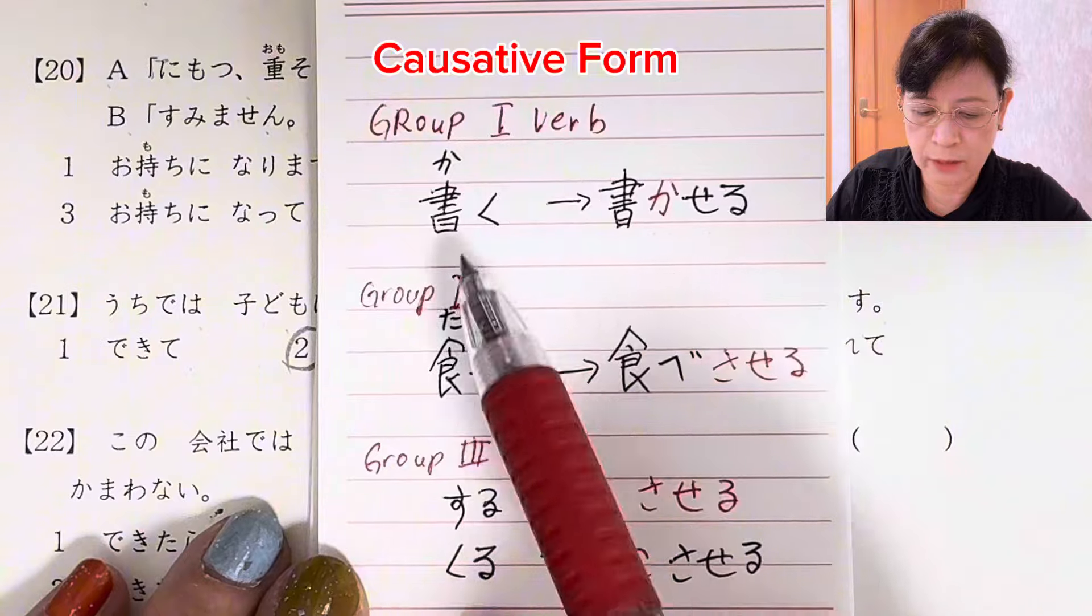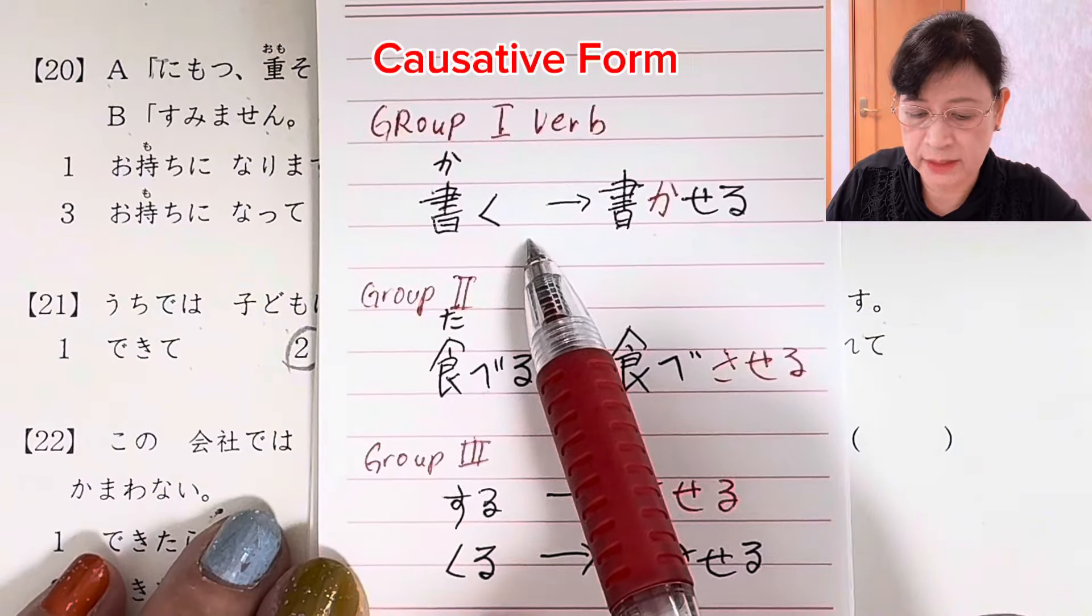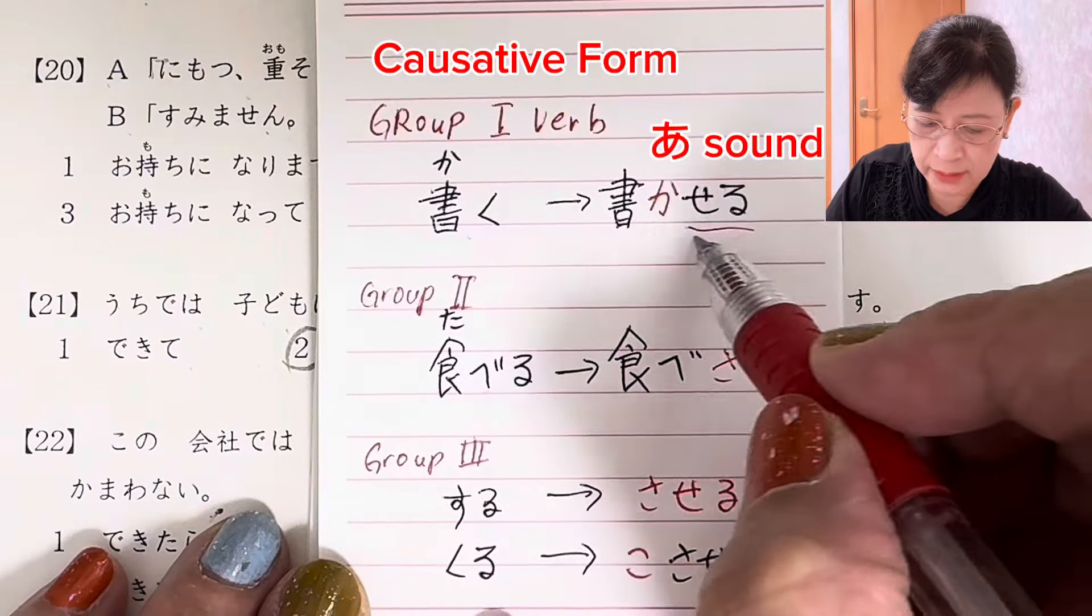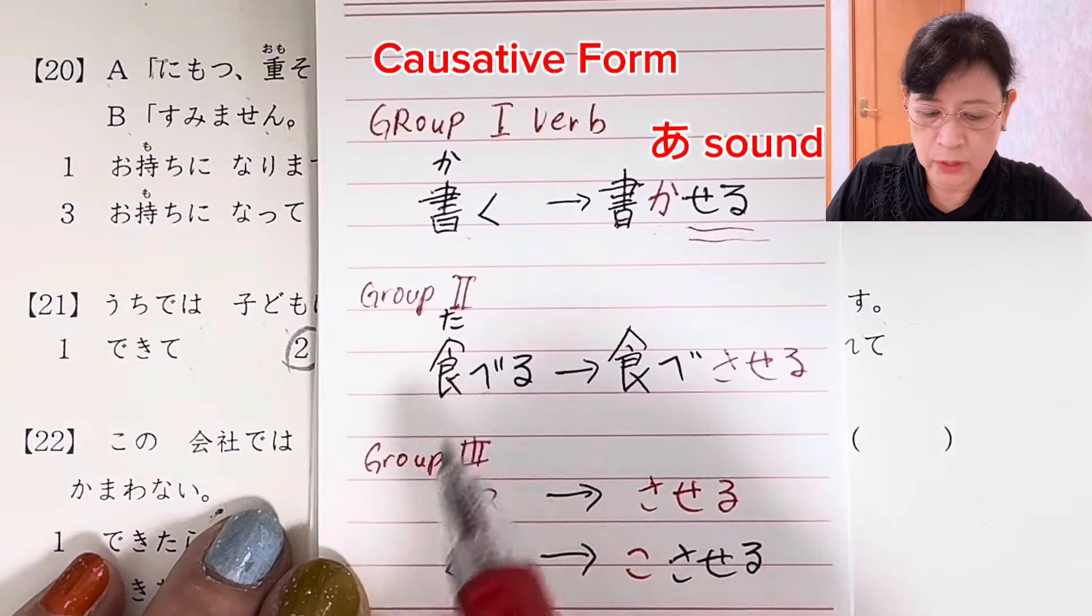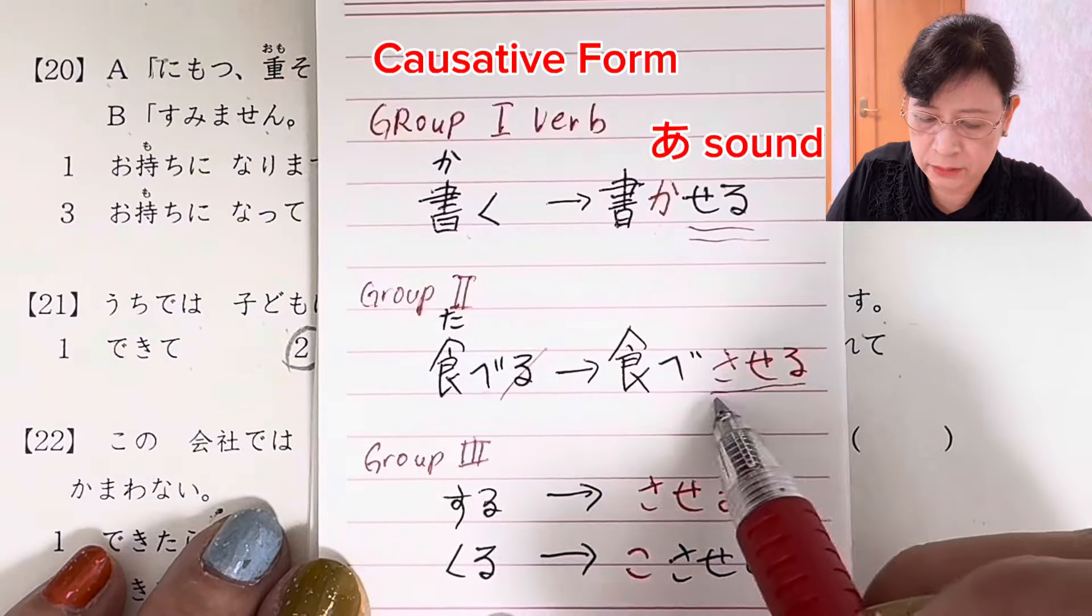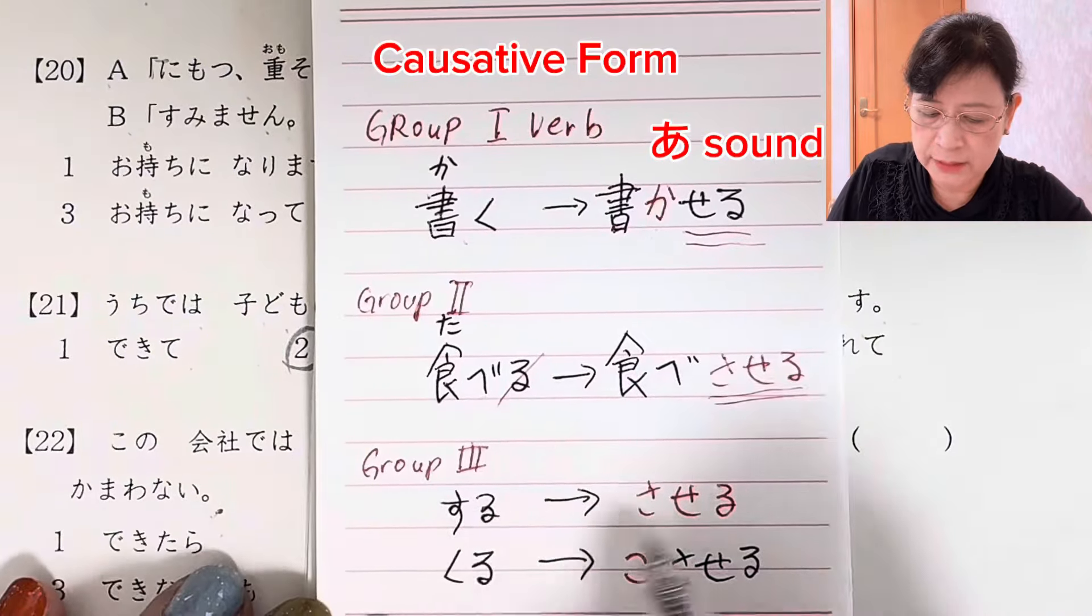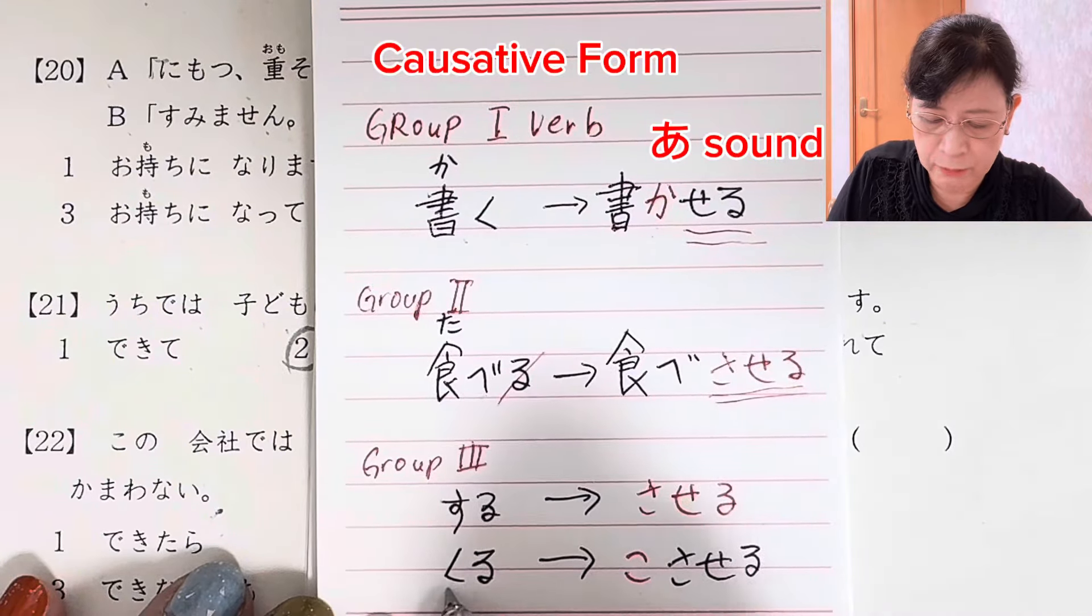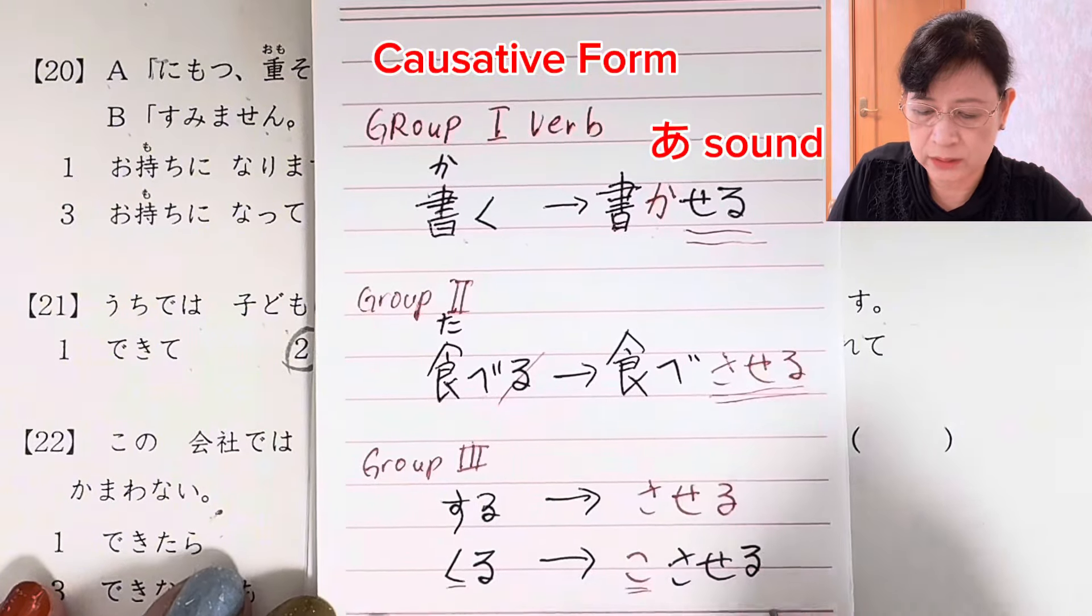This is how we make causative form, for those who don't know it yet or who would like to review. Group one verb: we have 書く. To change it to causative form, we change くtoか and add せる - 書かせる. For group two, for example 食べる, just take away る and add させる - 食べさせる. Group three: する is させる, and 来る is 来させる. Be careful with this: く becomes こ, plus させる - 来させる.